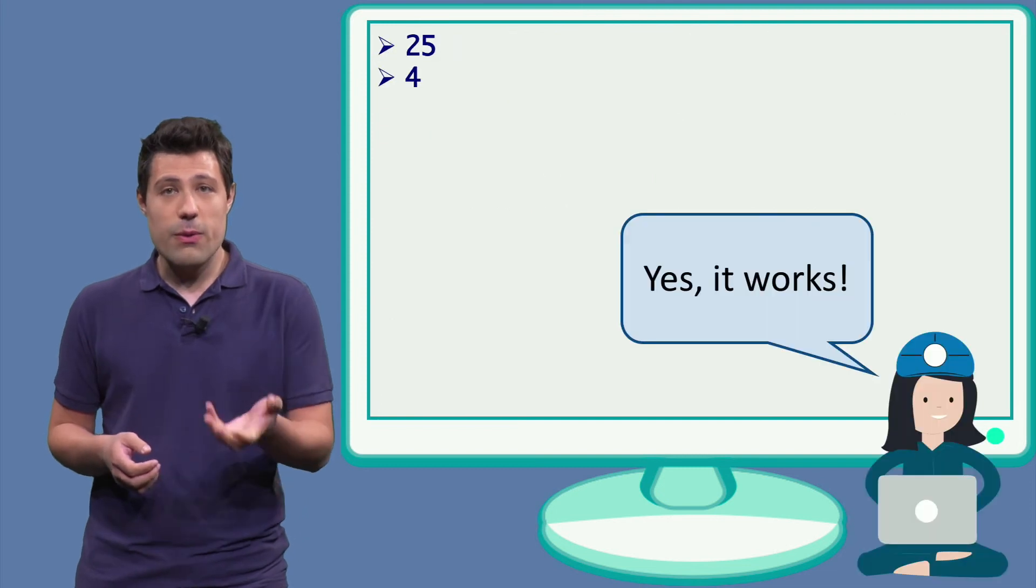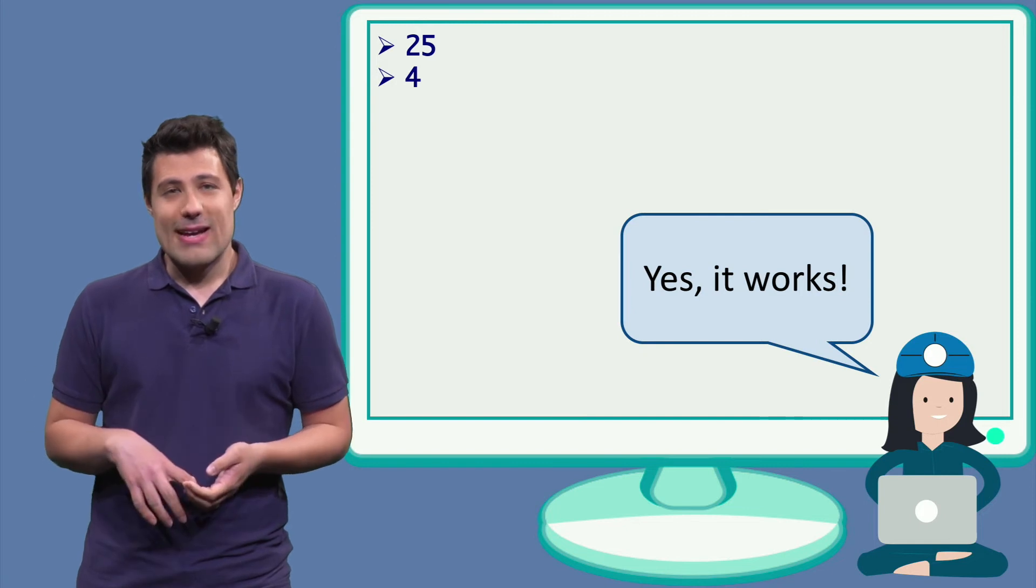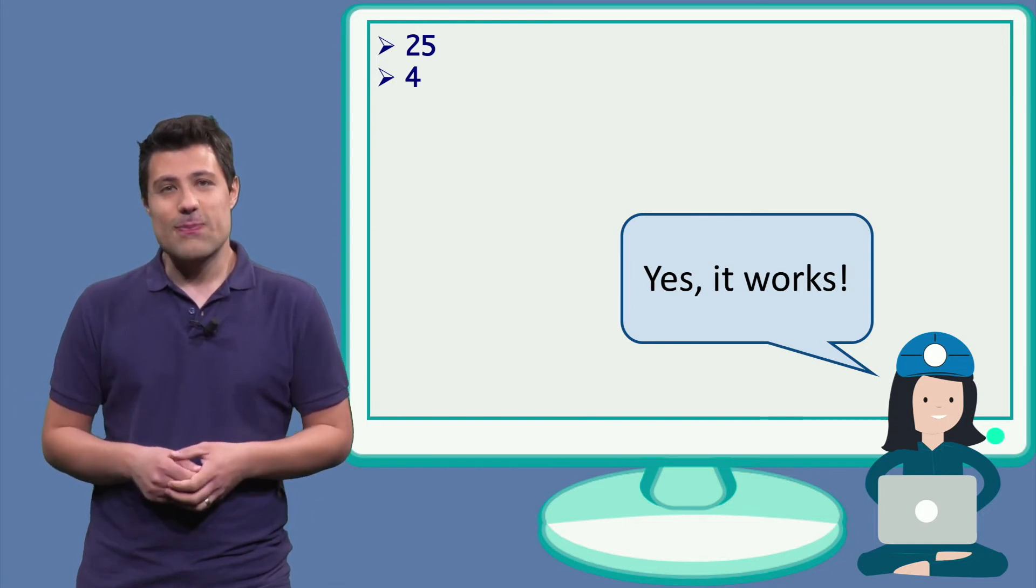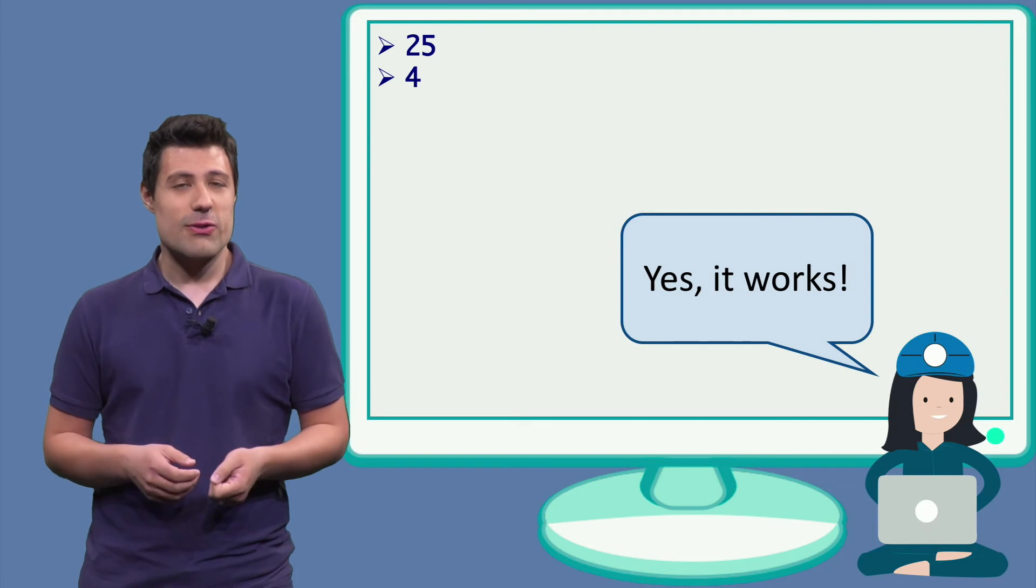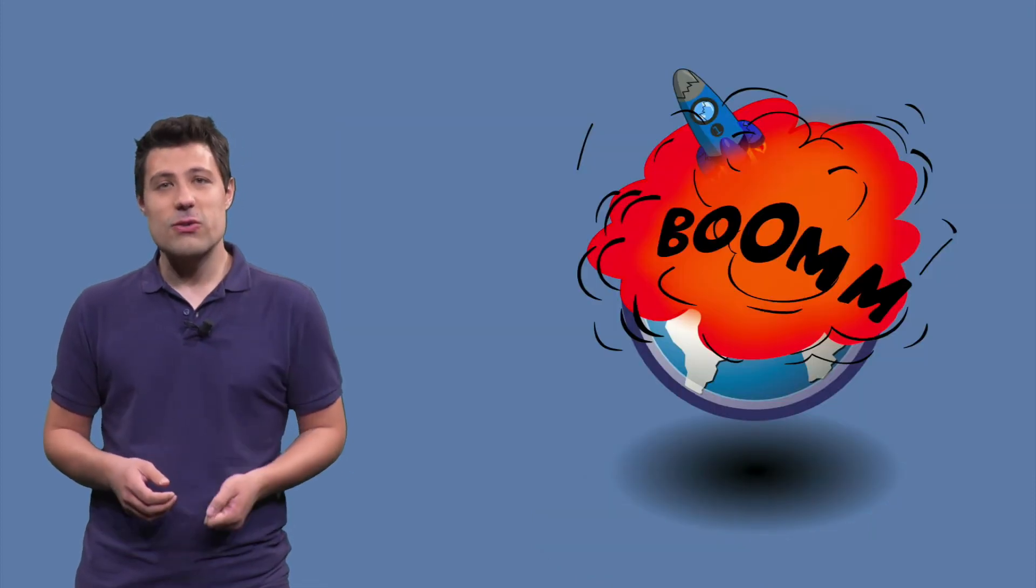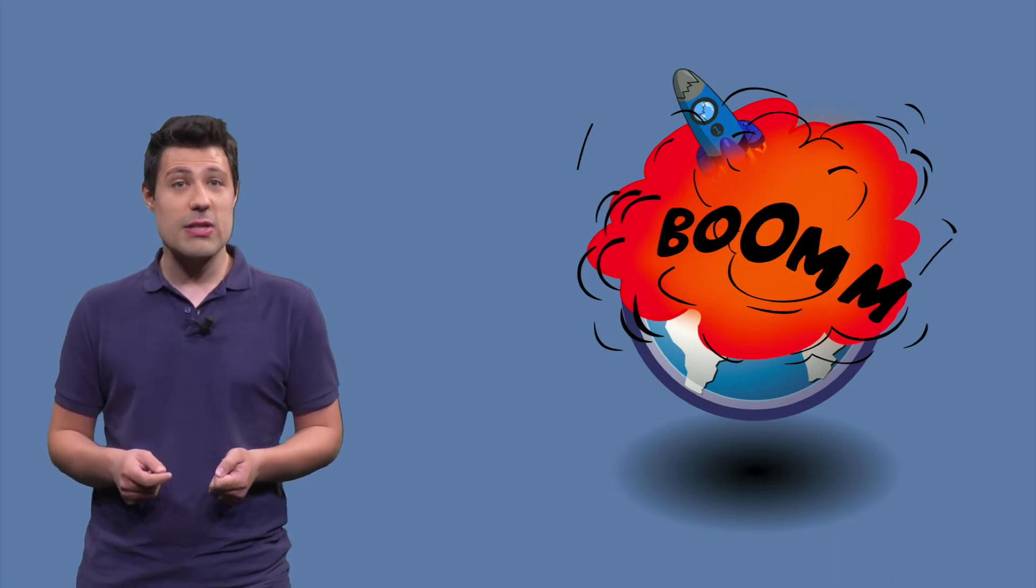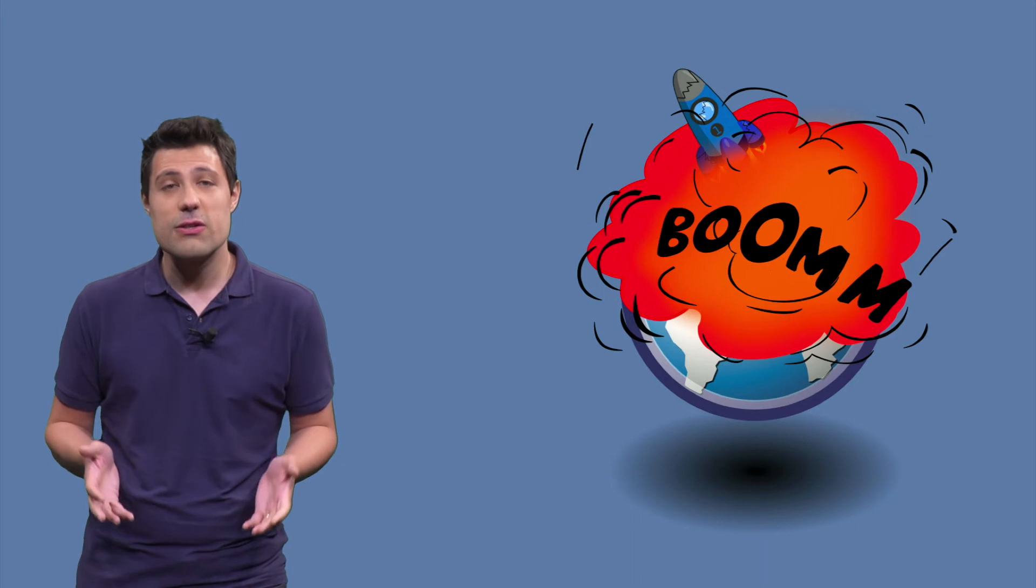But if I run the program, that's the output that I have, 25 and 4. This means our software works. We can ship it to our customers. Can we? Well, as soon as we ship the code we wrote, we will have a problem. Because this software doesn't work for all possible cases. There's a bug.